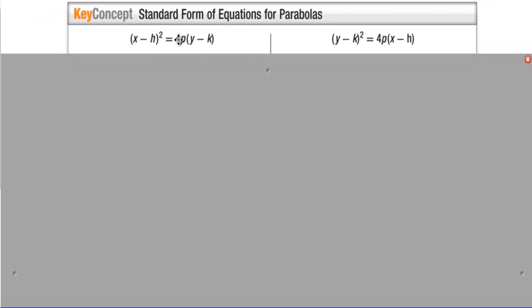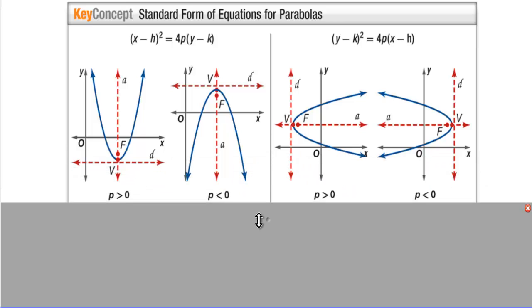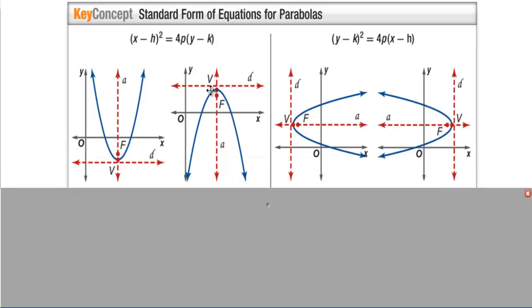Key concepts: standard form of equations for parabolas. We have (x − h)² = 4p(y − k), where (h, k) is the vertex. This parabola will open up or down because x is being squared. For the other form, the vertex is still (h, k), but this one opens right and left because y is being squared.